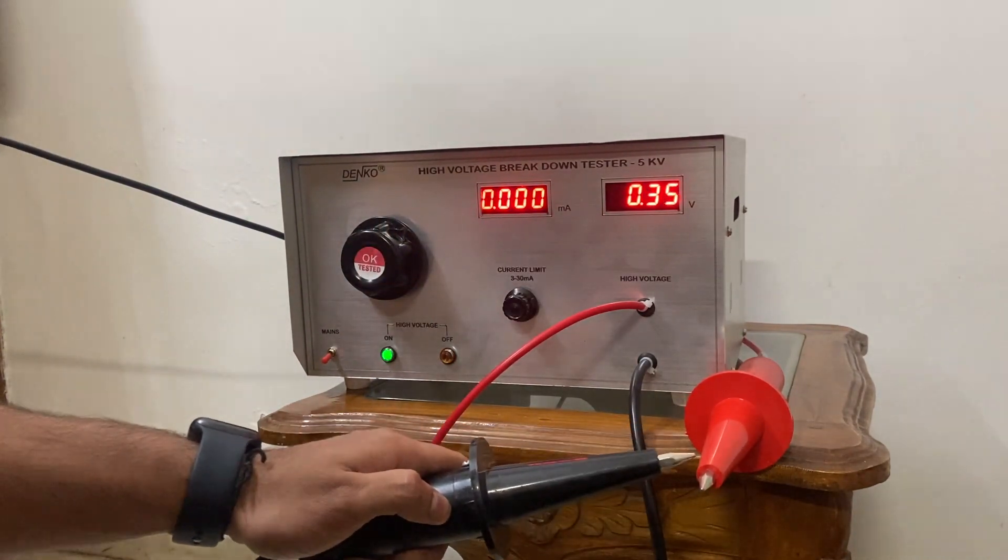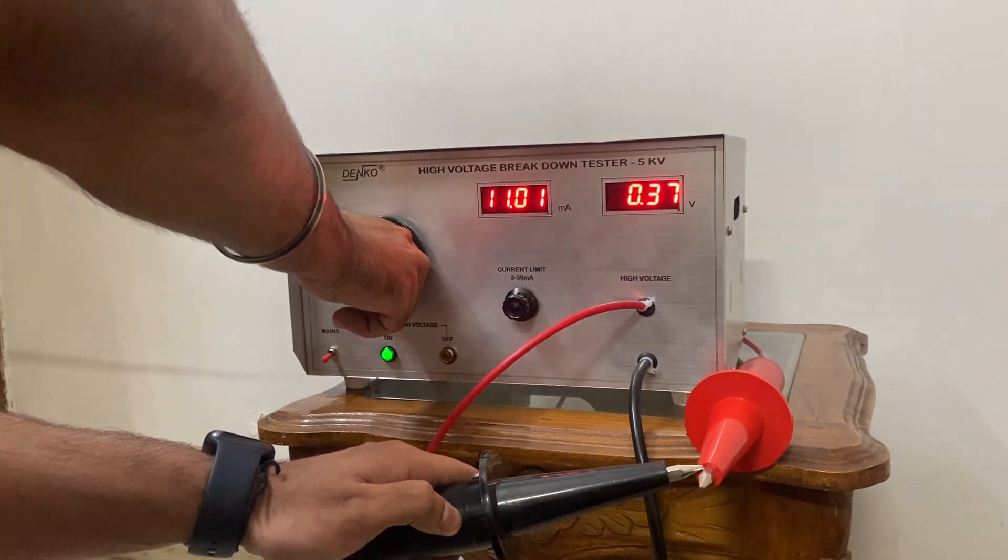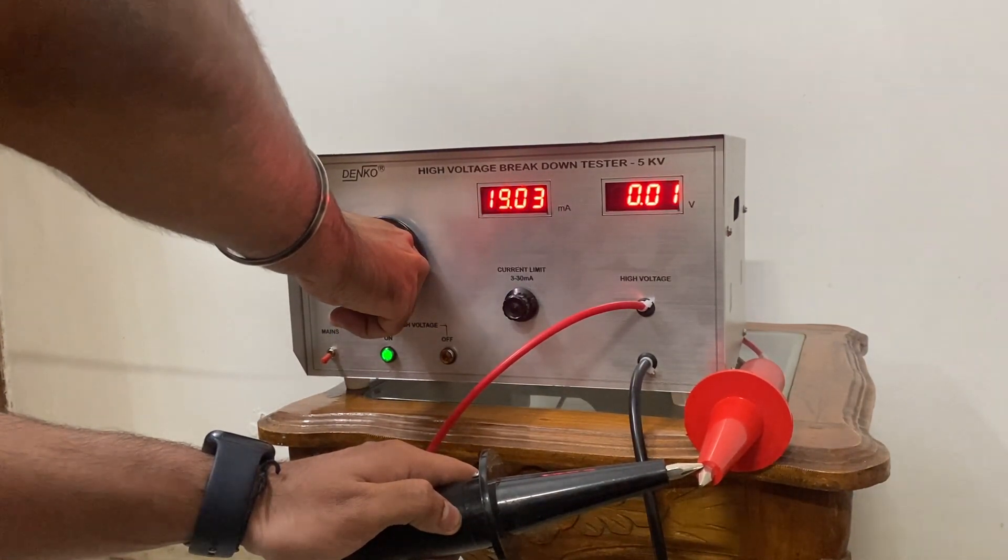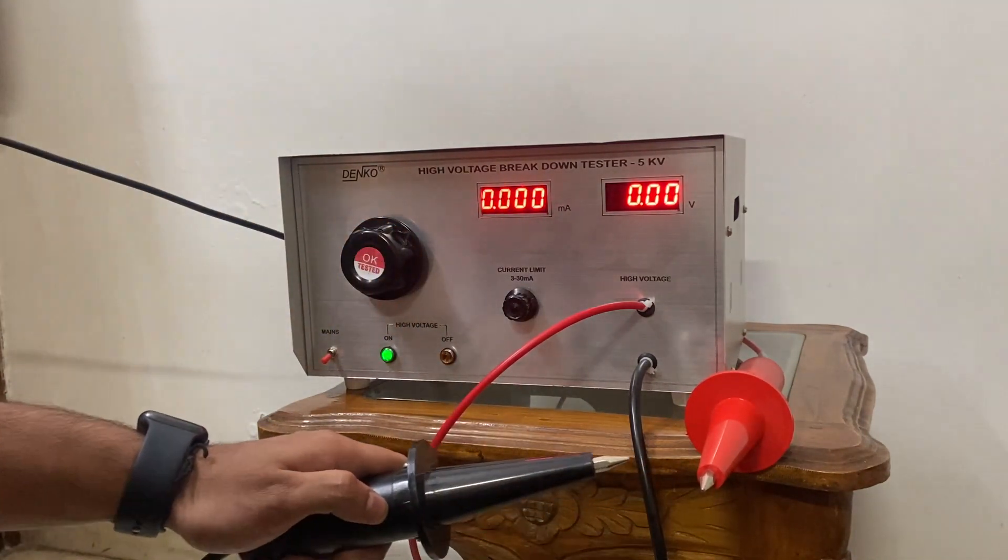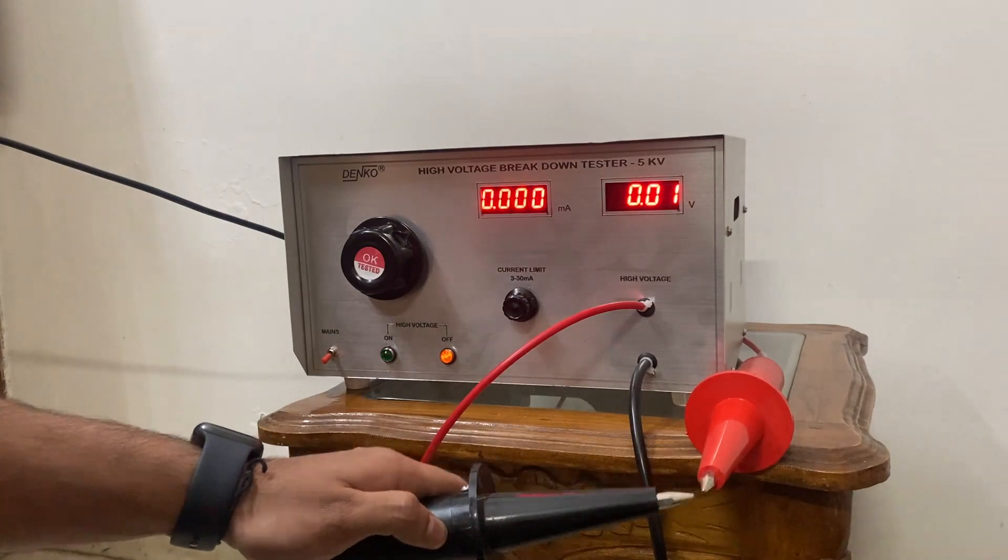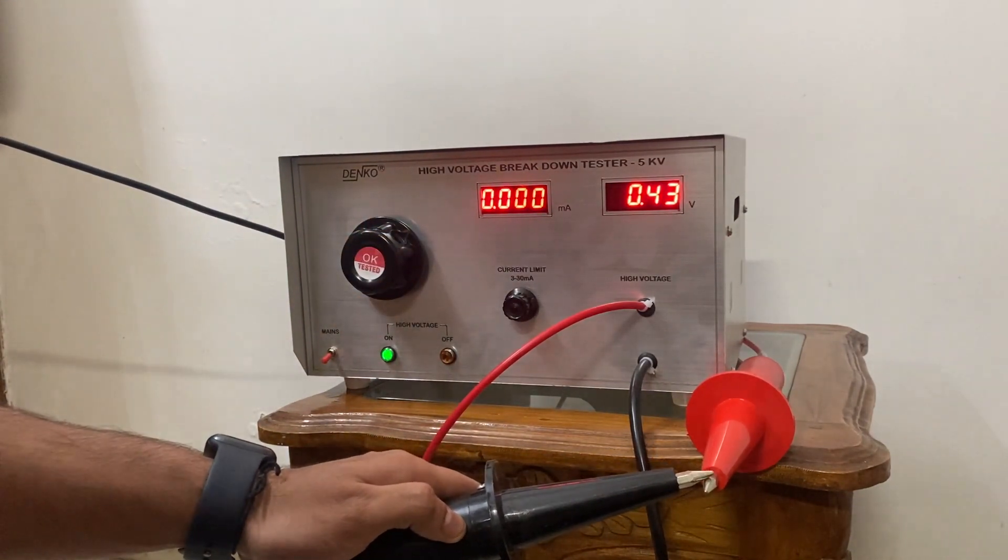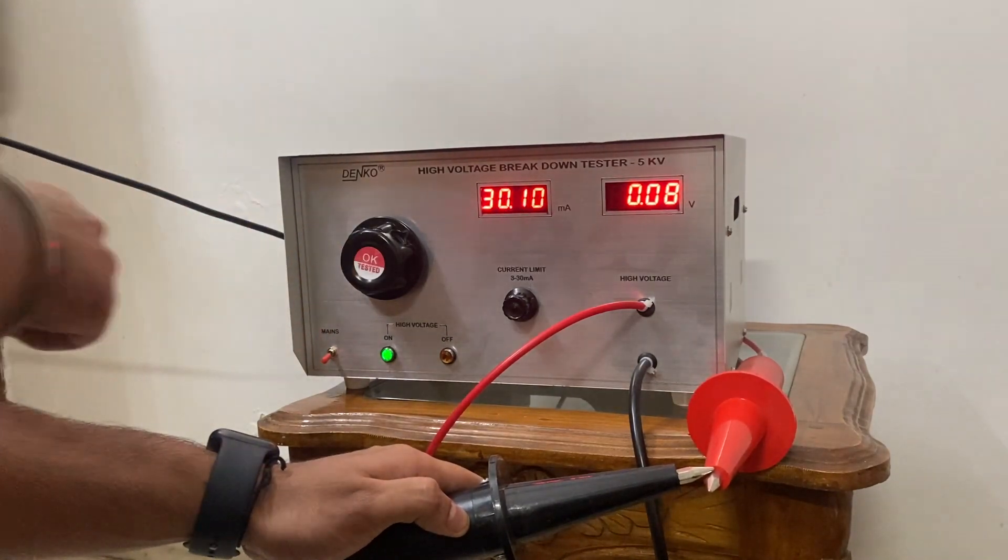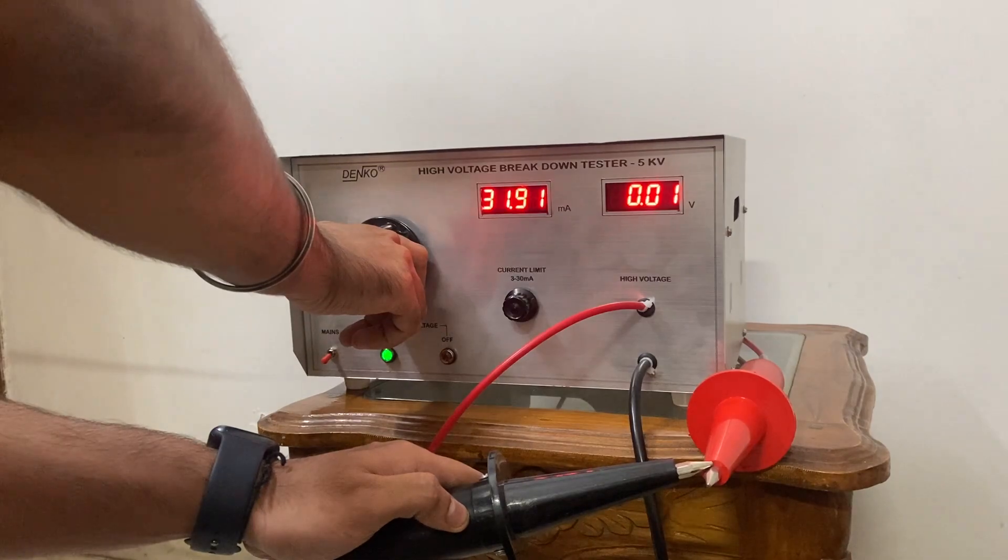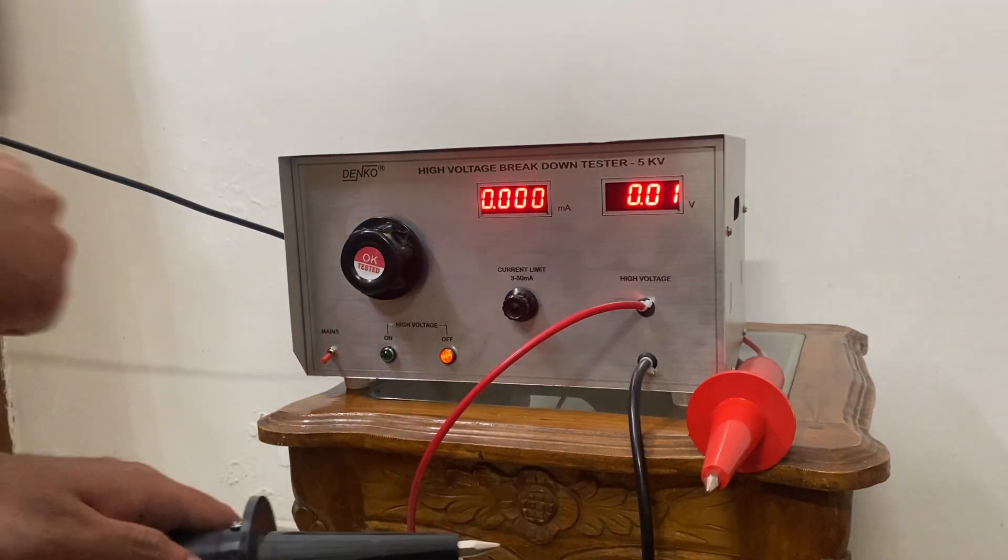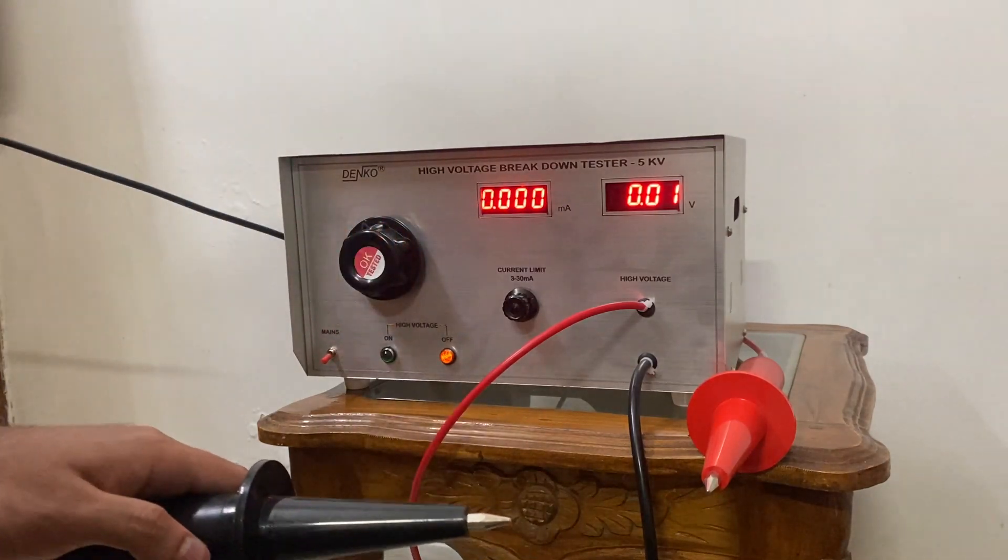So as you can see it trips at 30 mA. It's excessively sensitive so you have to be very slow with it. It's 30 milliamps. Now just a little bit to the right. It's going to trip. Yeah, the accuracy is really high on this product.